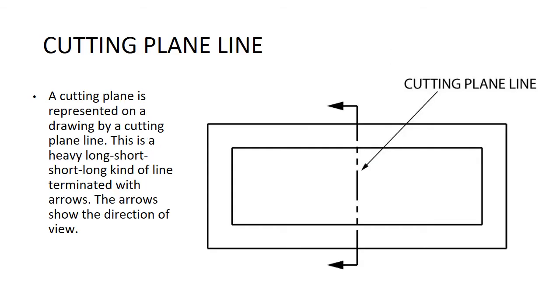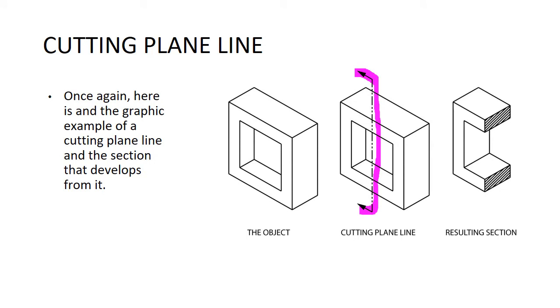A cutting plane is represented on a drawing by a cutting plane line. This is a heavy, short-short-long dashed line that's terminated with arrows. The arrows show the direction of the view, the direction that you're looking at the part from. Here's another graphic example of us taking a cutting plane line in the section that develops from it. There's our object, we take our cutting plane line, and then how we're going to look at this thing.